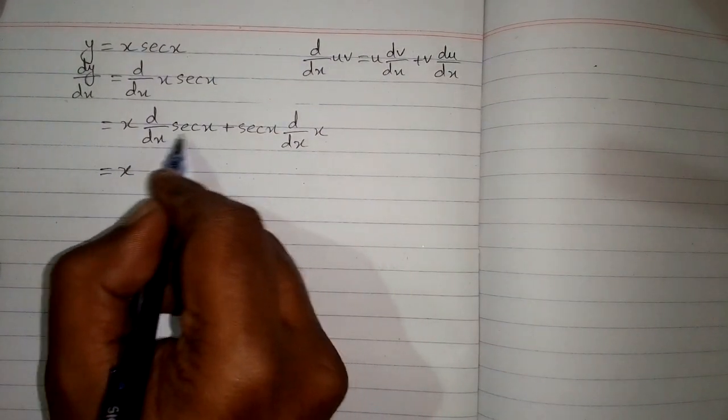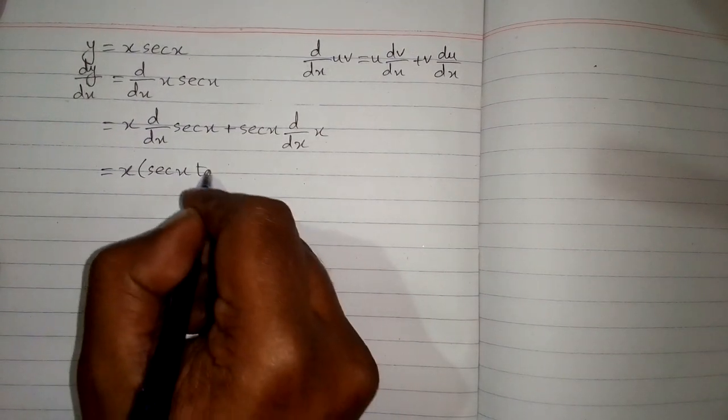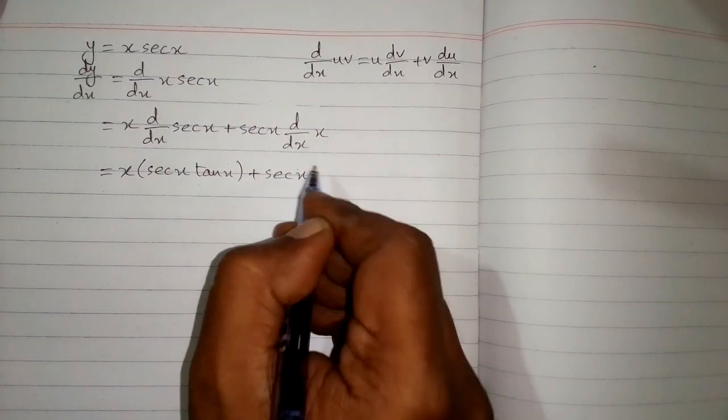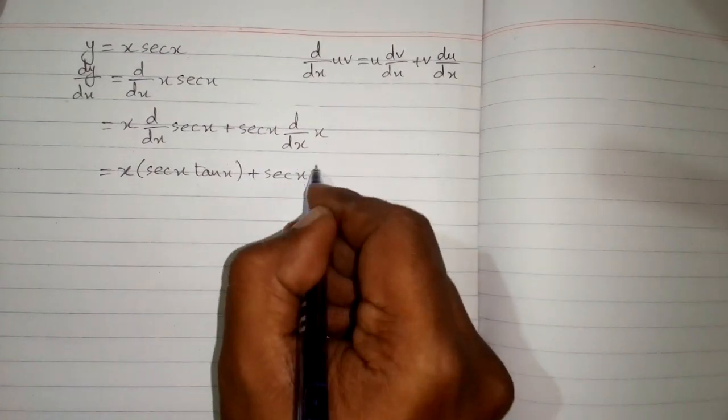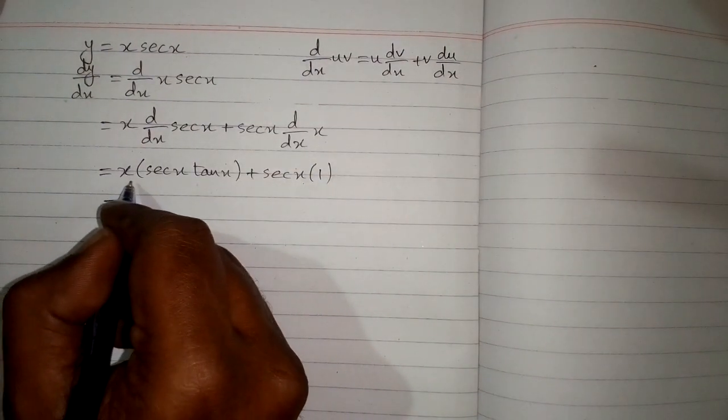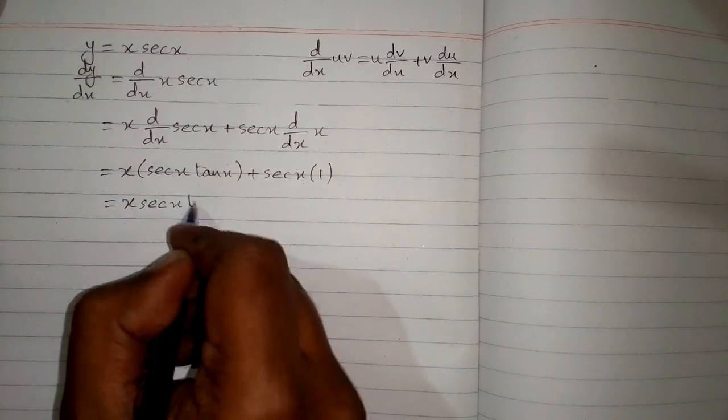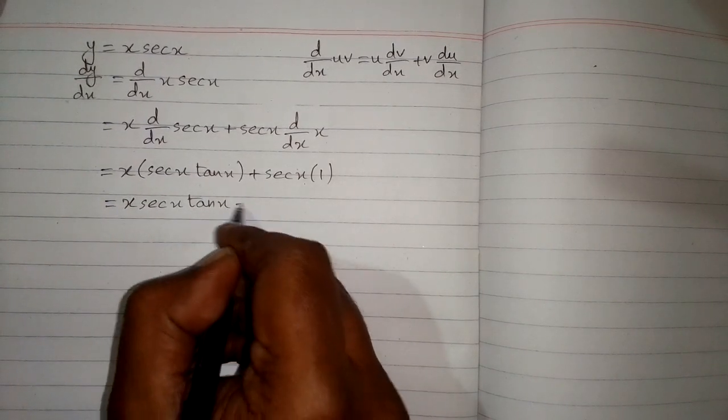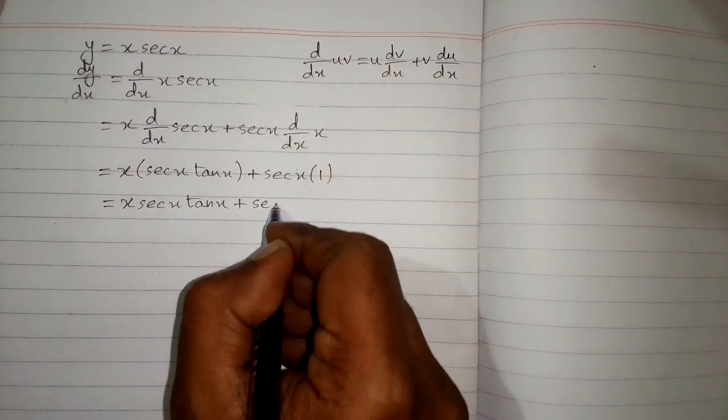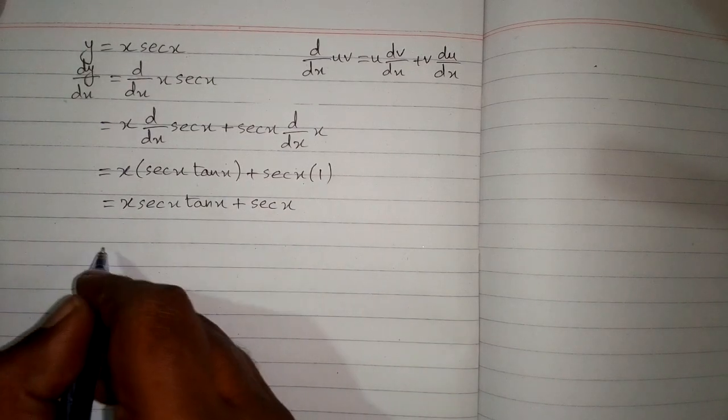Now the derivative of sec x is sec x tan x plus sec x multiplied by the derivative of x, and the derivative of x is 1. So this can be written as x times sec x tan x plus sec x times 1, which is sec x, and this is the required answer.